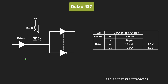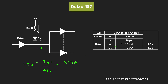So first, let us find the high state fanout for the driver. As you know, this high state fanout, or FOH, can be given as IOH divided by IIH. So here, the value of the IOH for this driver is equal to 5mA. On the other hand, the IIH value for this inverter is equal to 10mA. That means here, this high state fanout is equal to 5mA divided by 10mA, and that is equal to 500.